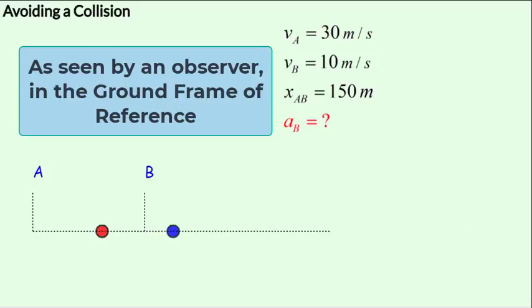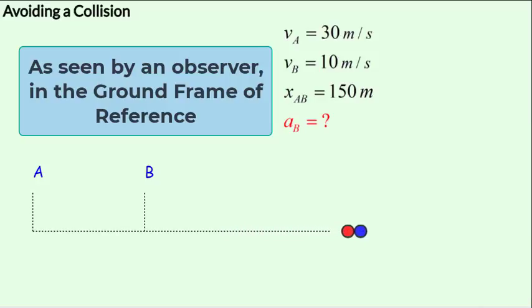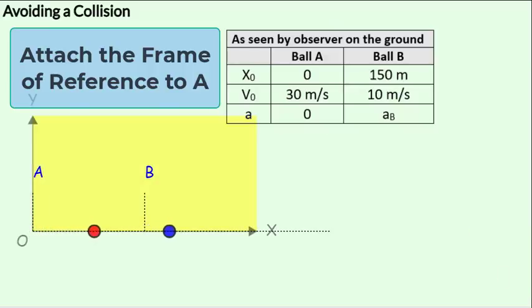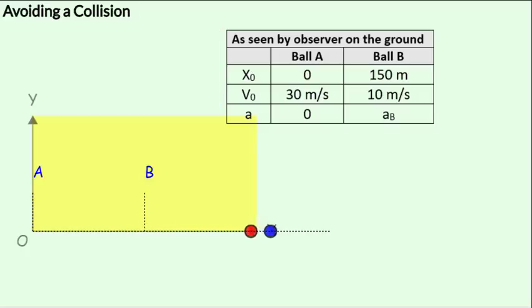Now, this is as seen by an observer in the ground frame of reference. Now let's watch this from A's perspective. So we attach the frame of reference to A and assume that A is at rest, and we would have to express B's displacement, velocity, and acceleration in terms of A's.